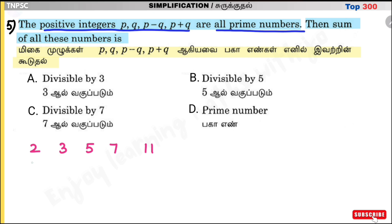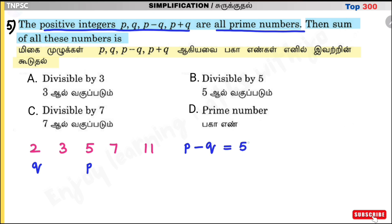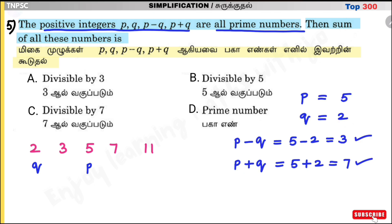Try p = 5, q = 2. Then pq = 10 — not prime. Wait, rechecking: p−q = 5−2 = 3 (prime), p+q = 5+2 = 7 (prime), and pq = 5×2 = 10 — but the four numbers are all prime. The sum of the four numbers is 17, which is also a prime number. So the answer is Option D: the sum is a prime number.